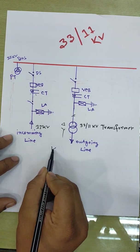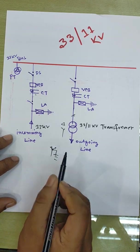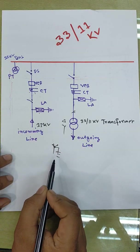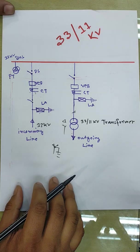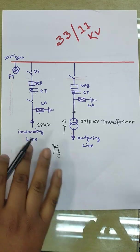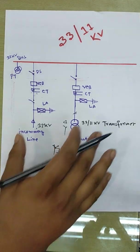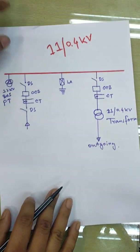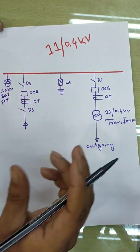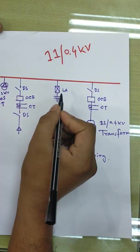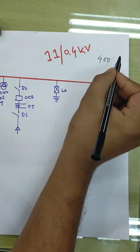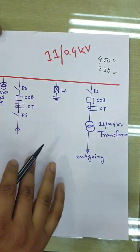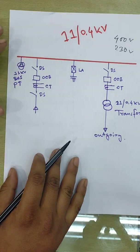There is a neutral wire, or neutral interior connection. This is a typical diagram of 11kV; we can see the incoming lines. We have 11 by 0.4kV and 11kV by 400V. We can see the three-phase residential voltage and this is the single-phase residential voltage.